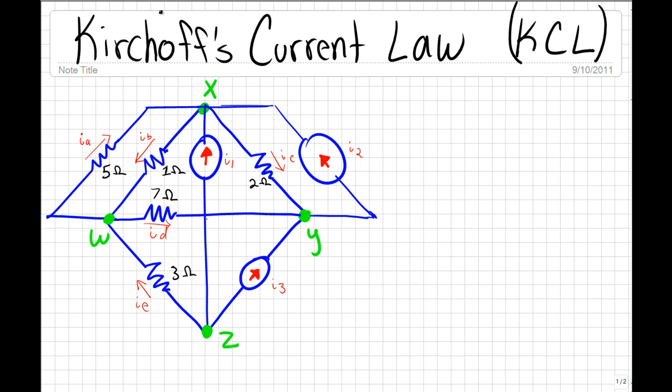Kirchhoff's Current Law states that the sum of all the currents entering and leaving a node is equal to zero. We should also remember that the currents that leave a node have a positive sign, and the currents that enter a node have a negative sign. So if we're trying to find the sum of all the currents at node W, this is what we're going to do.